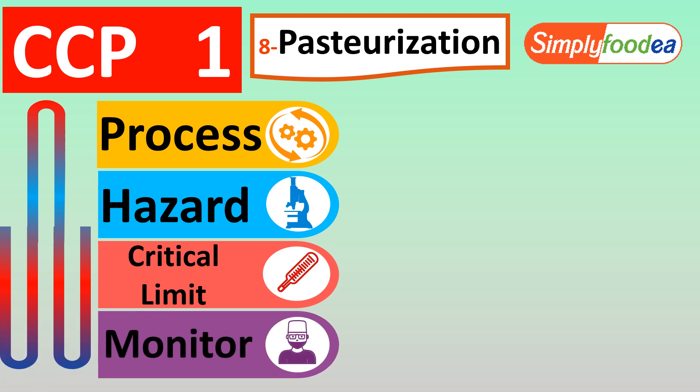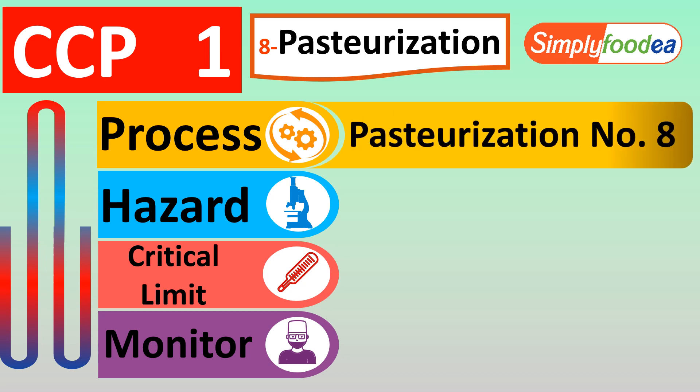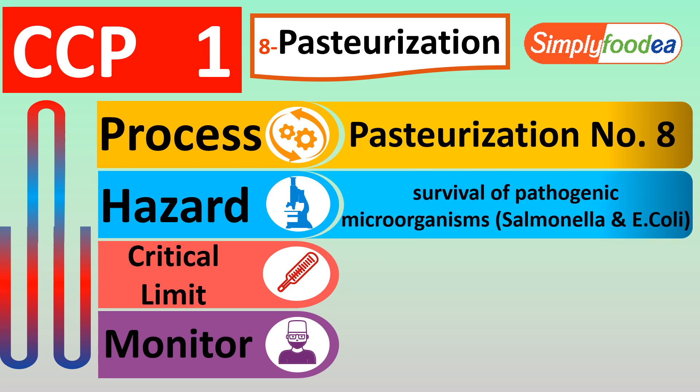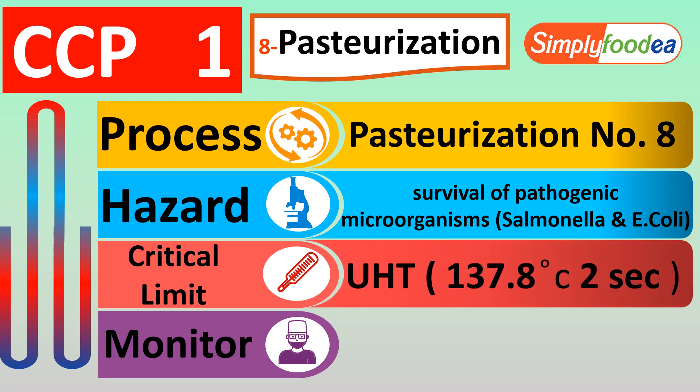We have learned that there are four main factors in each OPRP or in each CCP: the process, the hazard, the critical limit, and the monitoring. The process here will be pasteurization — process number eight. The hazard of this CCP will be the survival of pathogenic microorganisms like Salmonella or E. coli.